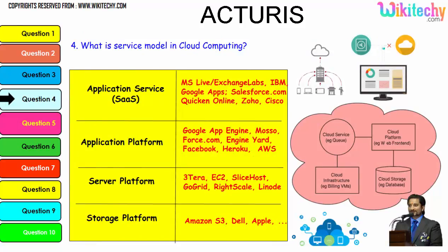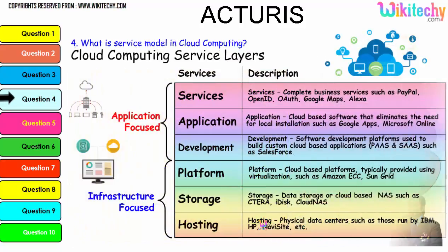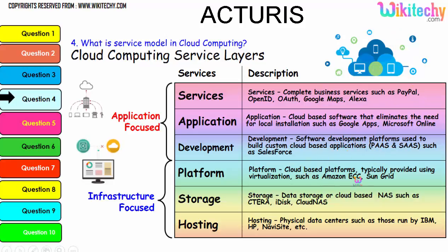Further digging into the service model, typical examples show: application service, application platform, server platform, and storage platform — storage platform examples include Amazon S3, Dell, and Apple. The important service layers are: services, application development, platform, storage, and hosting. These are important services which will also be asked in cloud computing interviews.